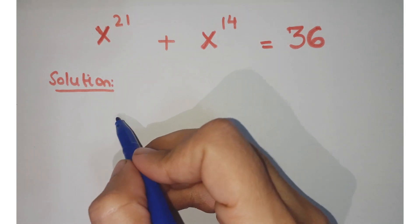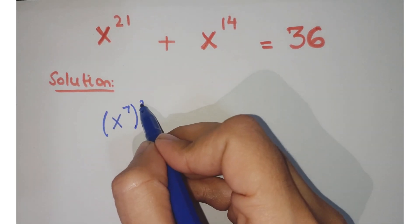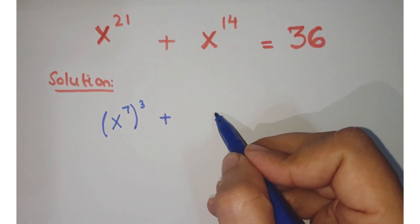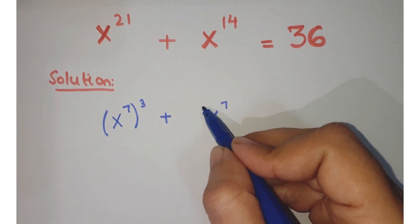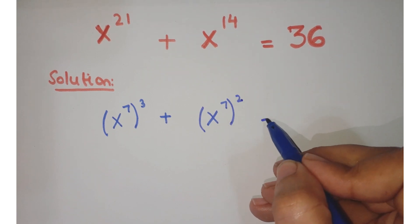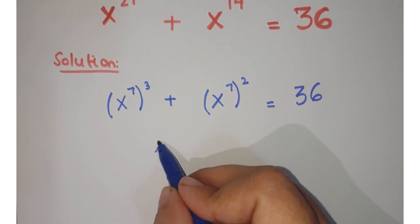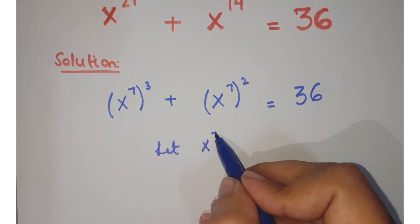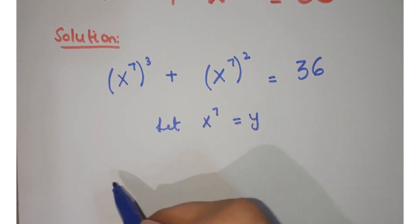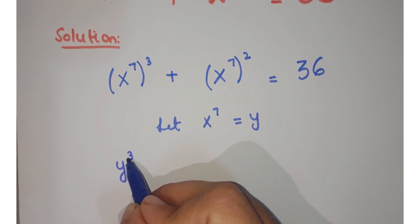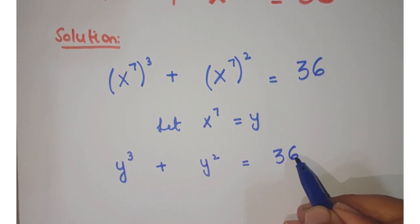We can write x to the power 21 as (x to the power 7) whole to the power 3, plus x to the power 14 written as (x to the power 7) whole to the power 2, equals 36. Now let's assume x to the power 7 equals y. Substituting, we get y cubed plus y squared equals 36.